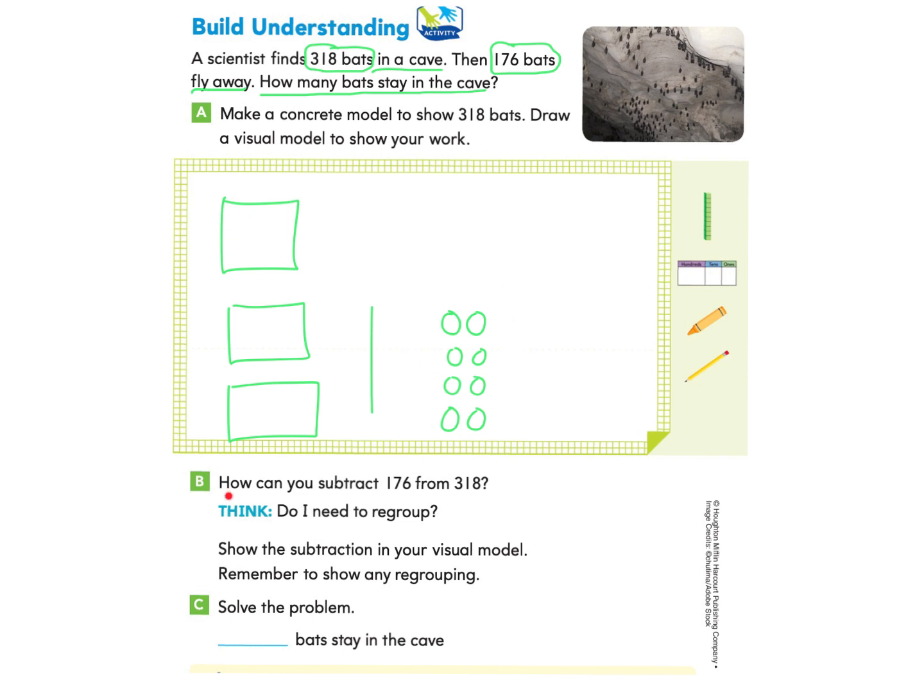Now we're going to look at part B. How can you subtract 176 from 318? Well, we have the 318 here. So what we're going to do is we're going to take away the 176. Underneath, it tells us to think, do I need to regroup? Remember, we've done regrouping in the past. We need to show the subtraction in your visual model and remember to show any regrouping.